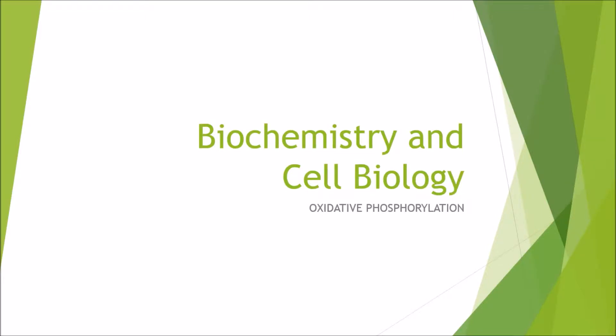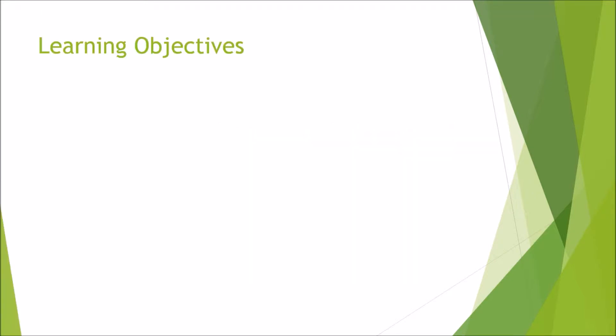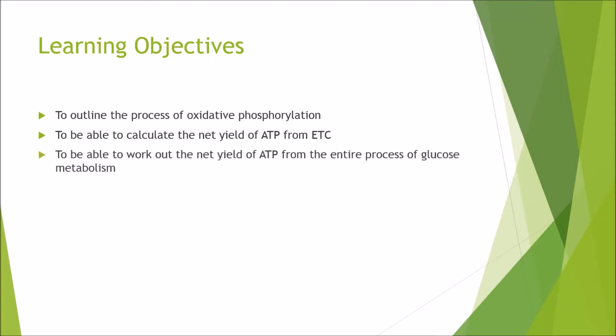Hi guys, welcome to Biochemistry and Cell Biology. In this presentation I will be covering oxidative phosphorylation. The learning objectives are to outline the process of oxidative phosphorylation, to calculate the net yield of ATP from the electron transport chain, to work out the net yield of ATP from the entire process of glucose metabolism, and to know about the few exceptions from the electron transport chain.